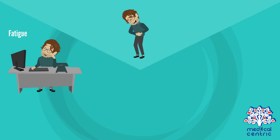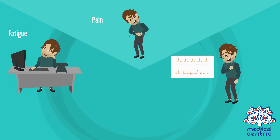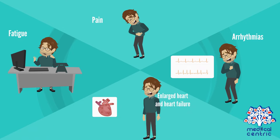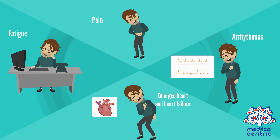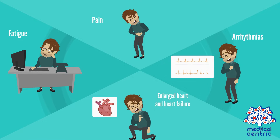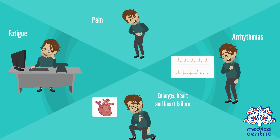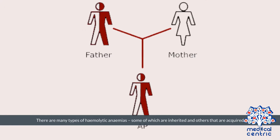Hemolytic anemia can lead to various health problems, such as fatigue, pain, arrhythmias, an enlarged heart, and heart failure. There are many types of hemolytic anemias, some of which are inherited, and others that are acquired.